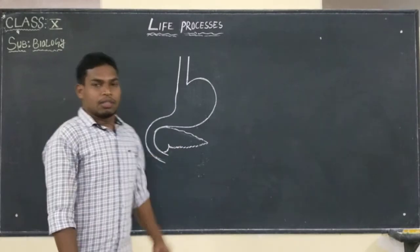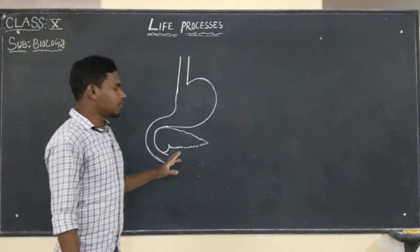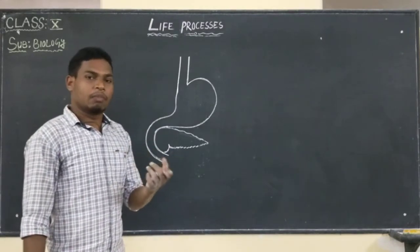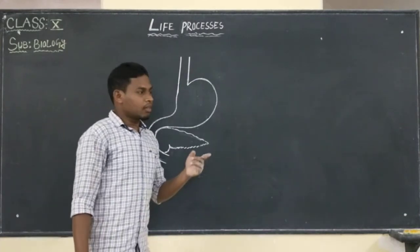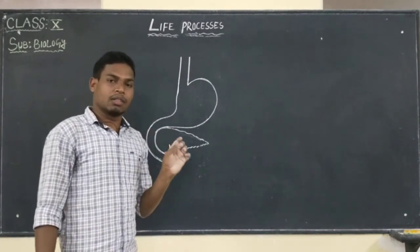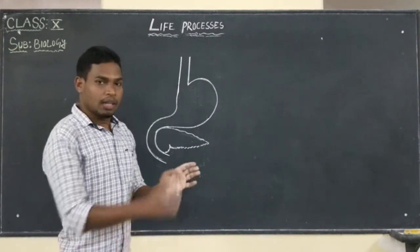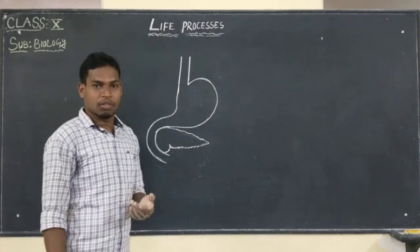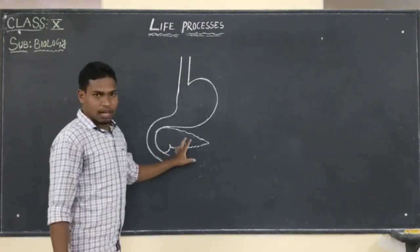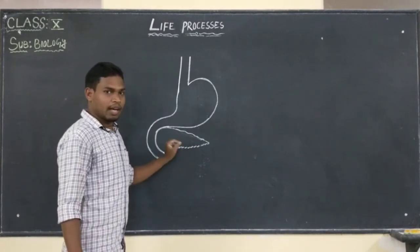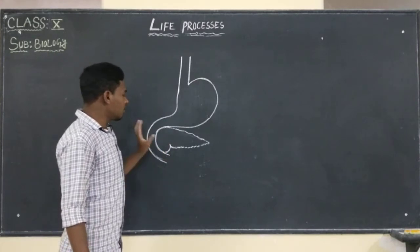So we saw two functions of liver. The first was the production of bile and how bile acts on fats. The second was glucose converting into glycogen — glycogen being the stored form of glucose. Now we are going to see the structure of pancreas and the function of pancreas.